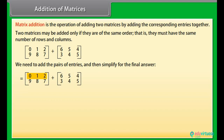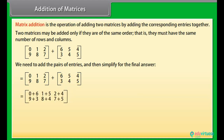We need to add the pairs of entries and then simplify for the final answer. Row-wise: first row [0, 1, 2], second row [9, 8, 7], plus first row [6, 5, 4], second row [3, 4, 5]. This gives first row: 0+6, 1+5, 2+4; second row: 9+3, 8+4, 7+5.